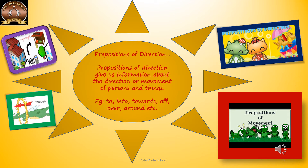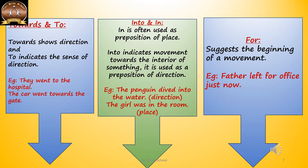Now, prepositions of direction give us information about the direction of movement of persons and things. For example, the dolphin dived into the sea — showing the direction of the dolphin. The boy fell off the chair — showing the direction in which he fell. There are many prepositions of direction or movement like: towards, to, into, in, for. Many times the same prepositions can function as prepositions of time, prepositions of position, or prepositions of direction, depending on the sense of the sentence.